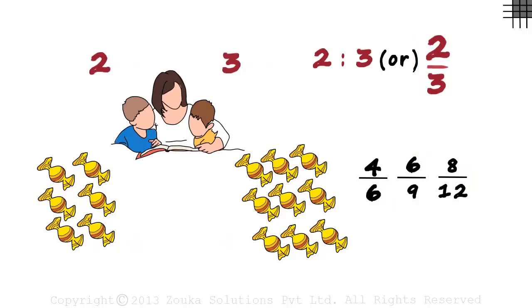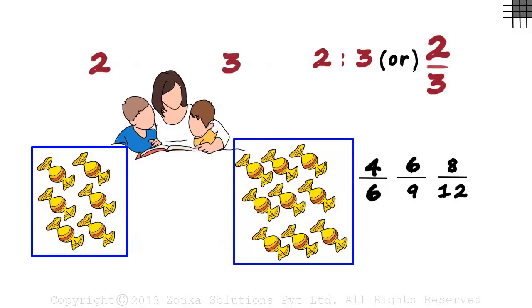What does all this mean? It means that if the ratio of two quantities is 2 by 3, then the quantities will be multiples of 2 and multiples of 3 respectively, and not necessarily just 2 and 3.